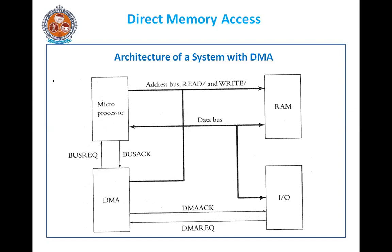First of all, the DMA asserts the DMA request signal, then asserts the bus request signal. This bus request is sent to the microprocessor. When the microprocessor is ready to give up the bus — that is, it will not execute any instructions for a short period of time — then the microprocessor asserts the bus acknowledgement to the DMA.